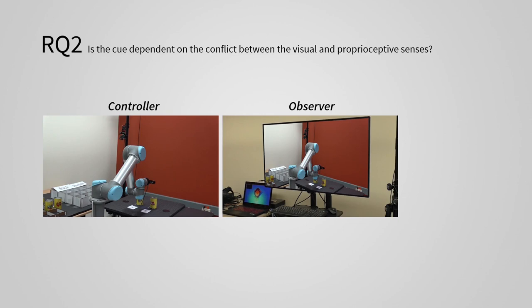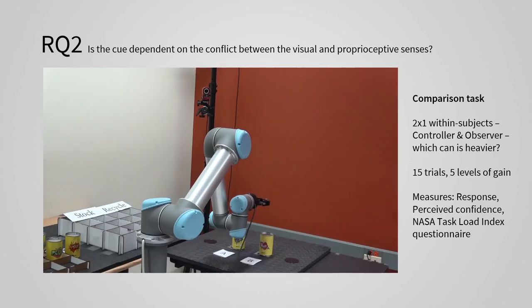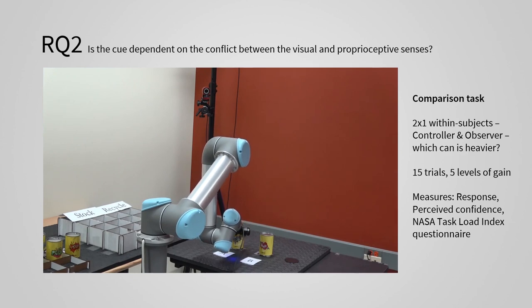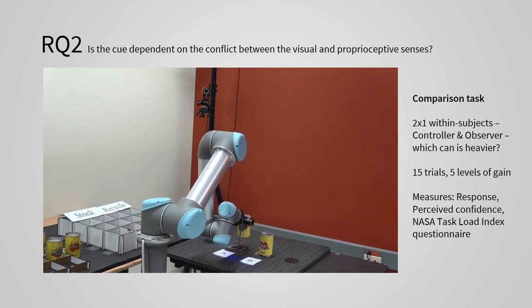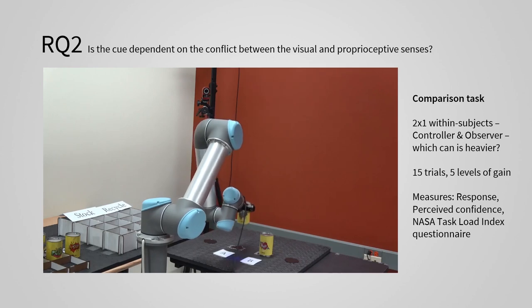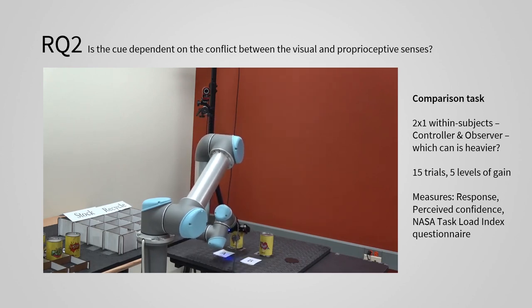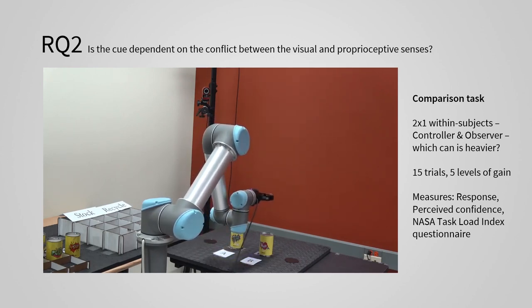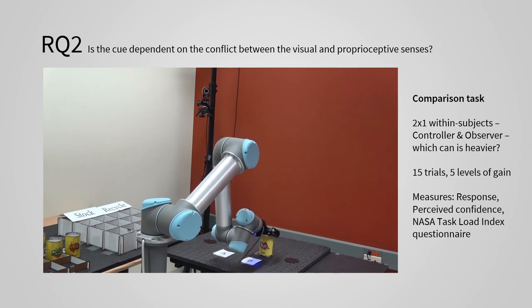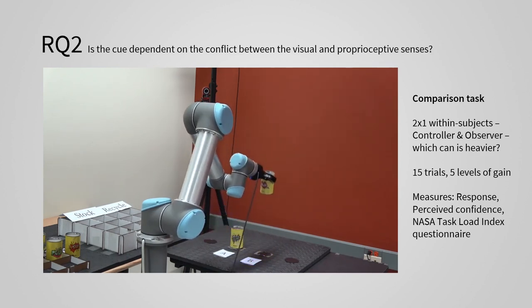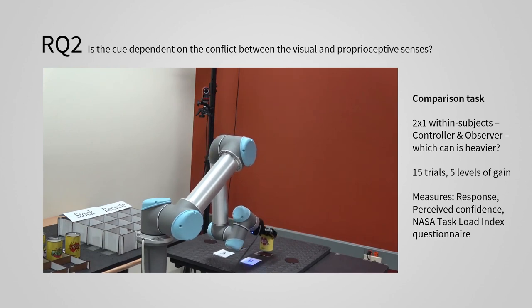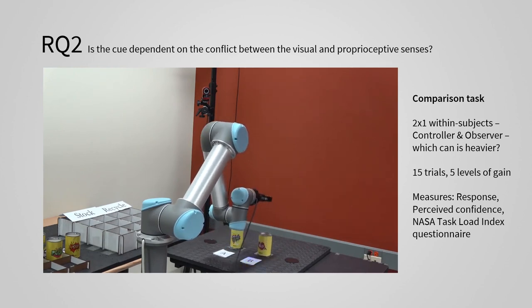One where the participant controls the robot and the other where the participant only watches a video of the robot movement. We call these conditions controller and observer conditions. For each trial, participants lifted two metal cans that look similar and weighed the same. We created the perception of a virtual weight by using one of five levels of gain to generate motion cues. Participants were not aware that the cans weighed the same and they were asked to respond as to which can was perceived as heavier. Each participant had 15 trials in each condition.